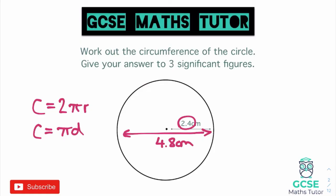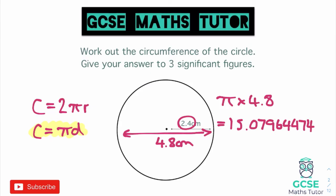It doesn't really matter which formula you use, as long as you remember to multiply the radius by 2 when you only have the radius. If you're not 100% confident, just stick with the formula pi times diameter. So we type pi times 4.8 into the calculator, convert to a decimal, and get 15.07964474. This question says three significant figures: 1, 5, 0 — chop after the 0. There's a 7 after it, so it rounds up to 15.1 centimetres.